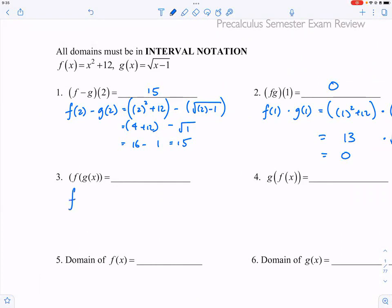So now, what this means is that F of G of X. What is G of X? Well, at the very top, it says G of X is equal to square root of X minus one.